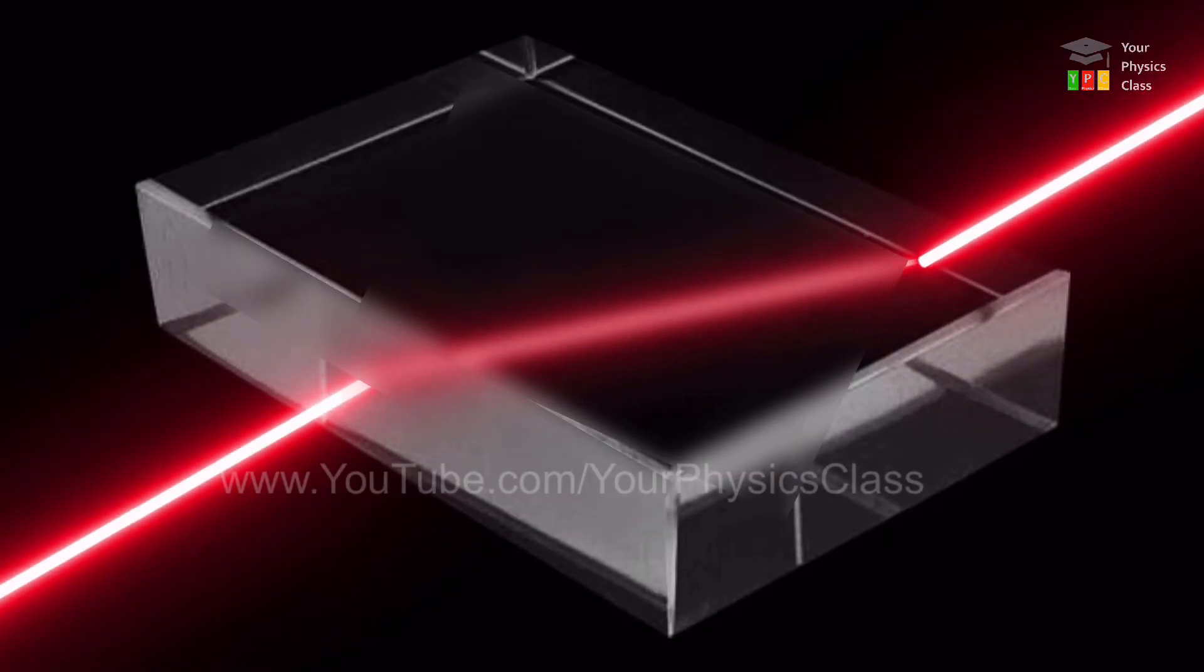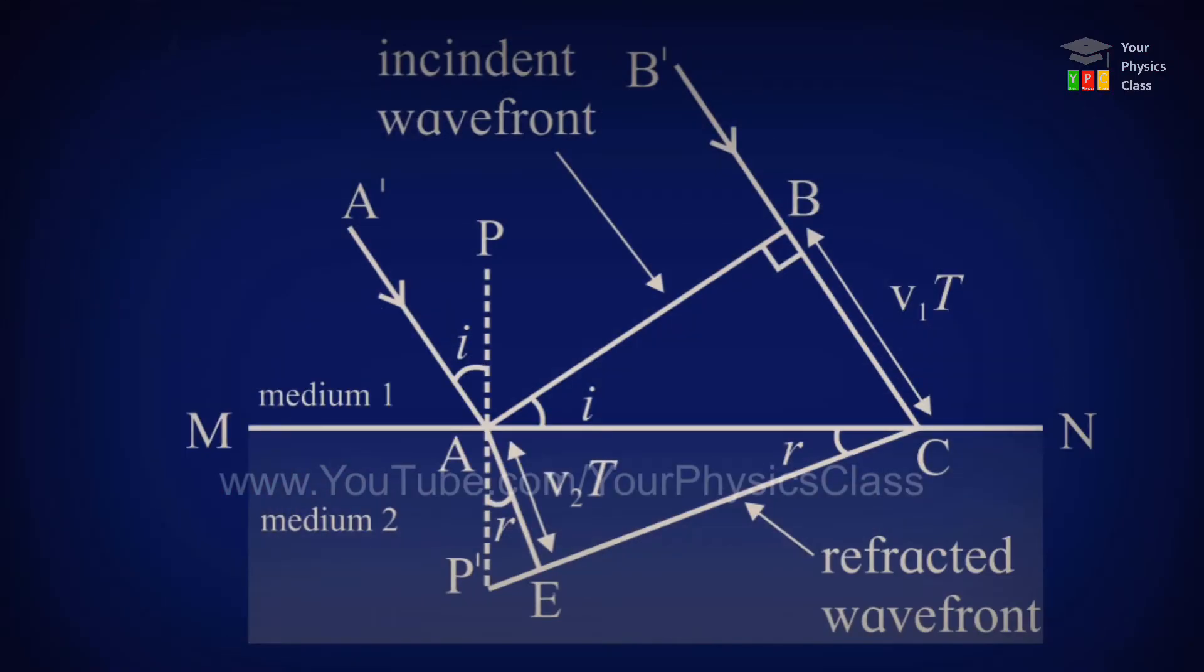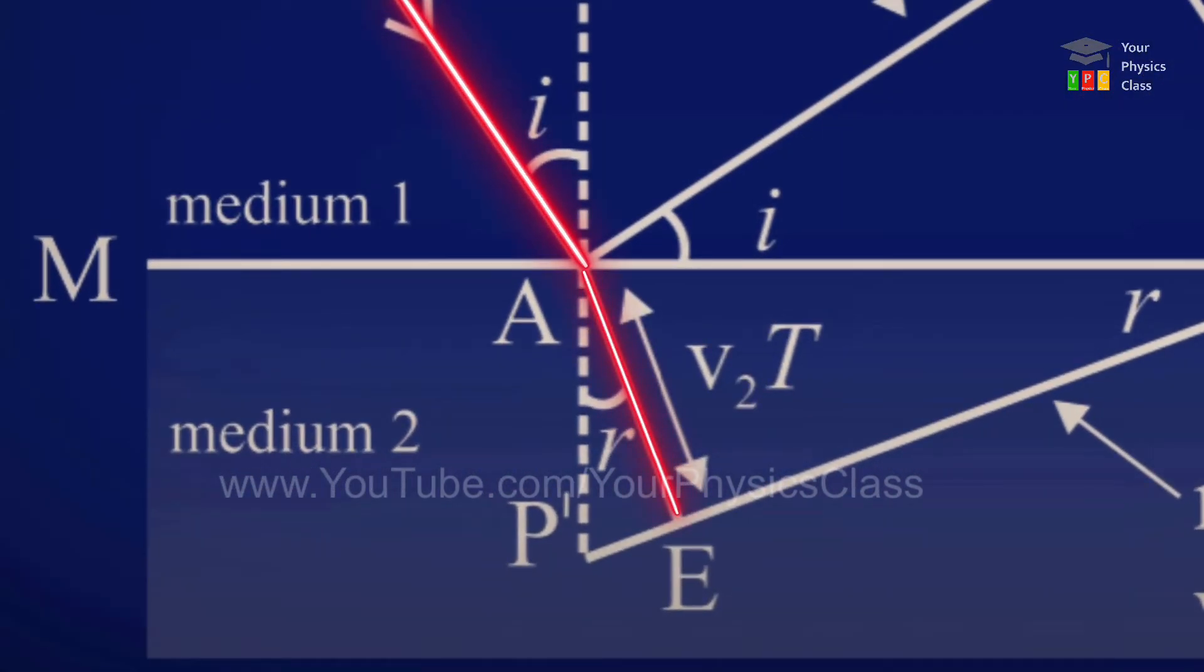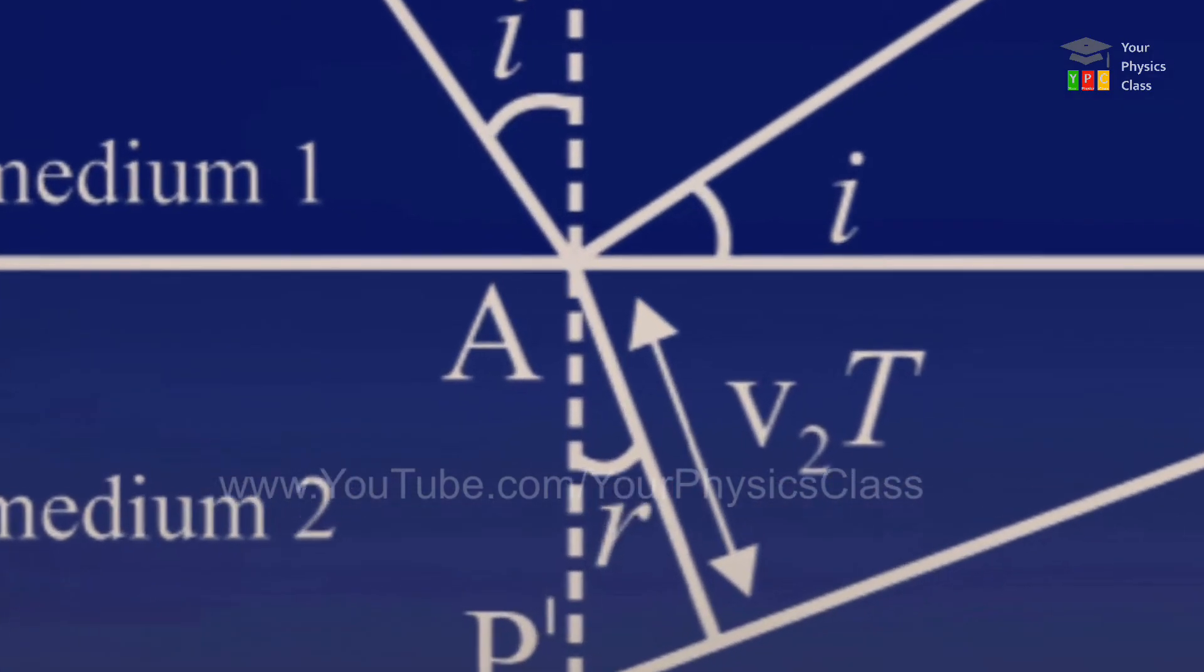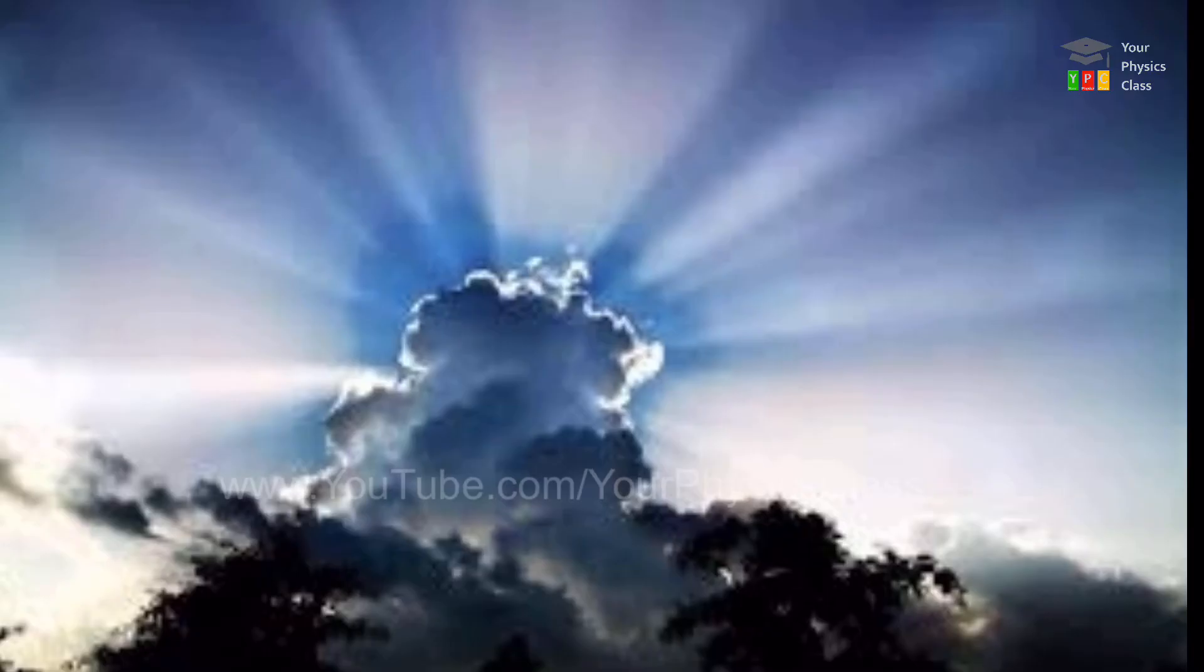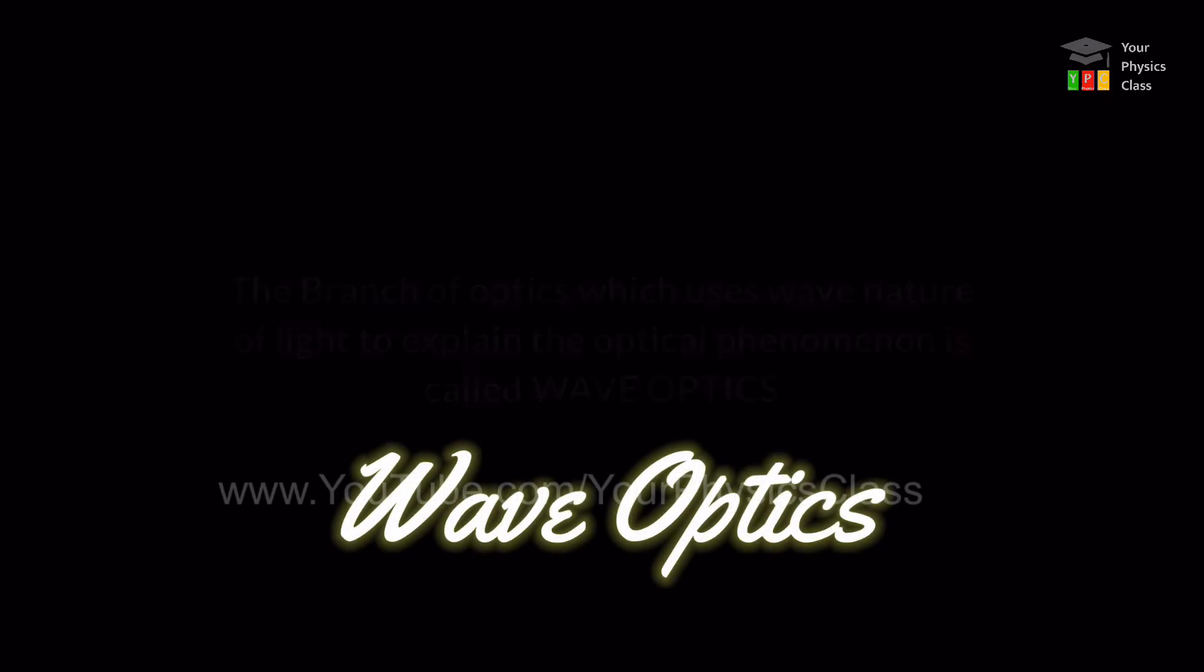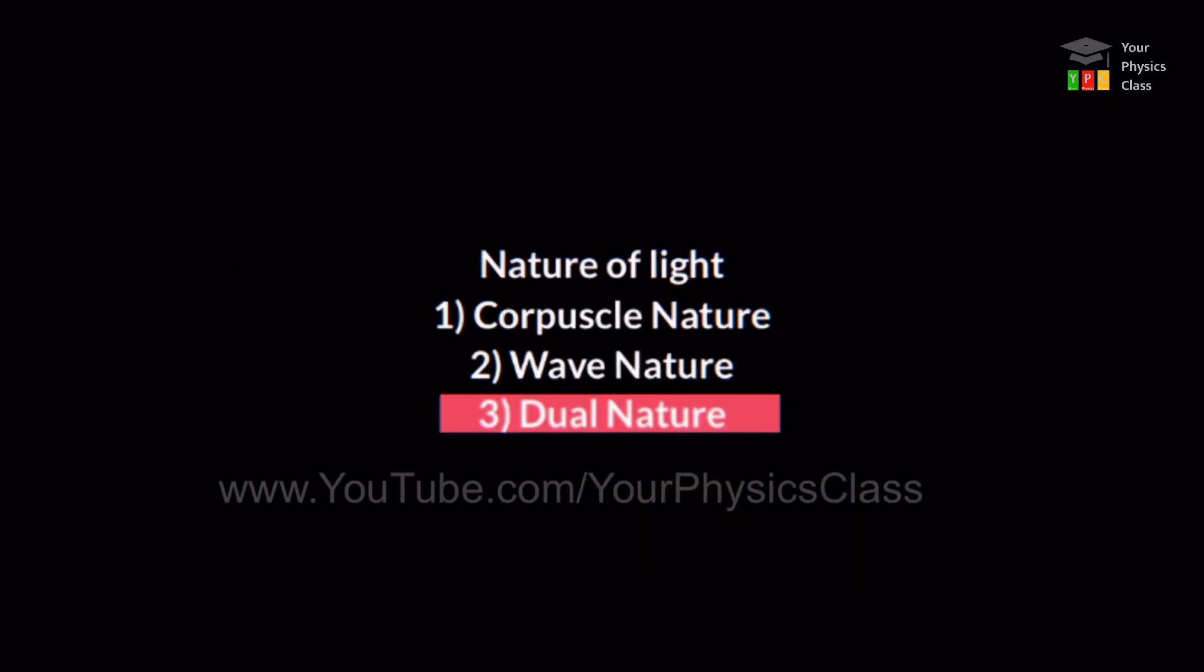Wave theory showed that if the speed of light wave in denser medium is smaller than rarer medium, then light bends towards normal. Thus, wave nature of light could explain all visible effects exhibited by light. The branch of optics which uses wave nature of light to explain the optical phenomena is called wave optics. Let us now see dual nature of light.